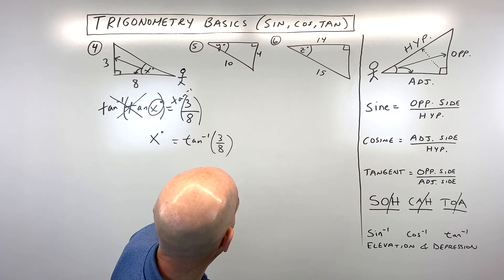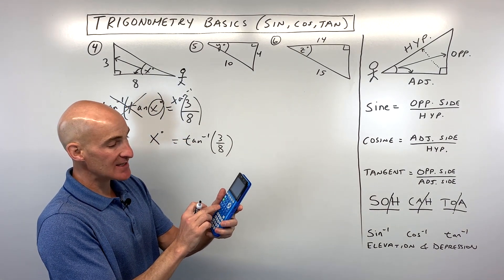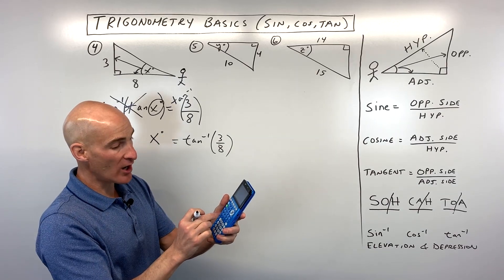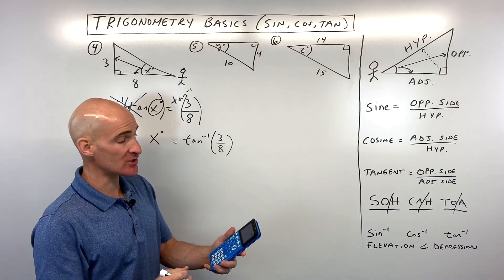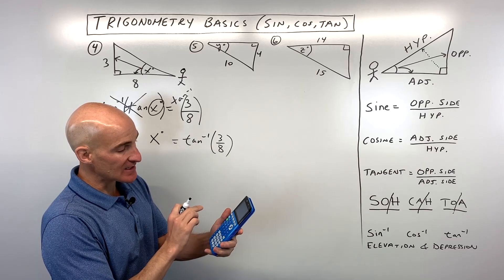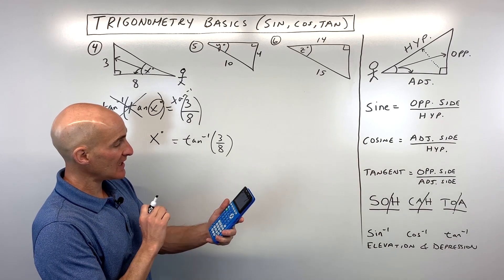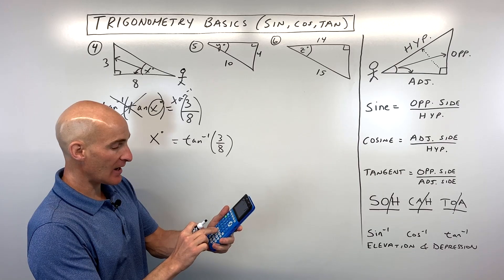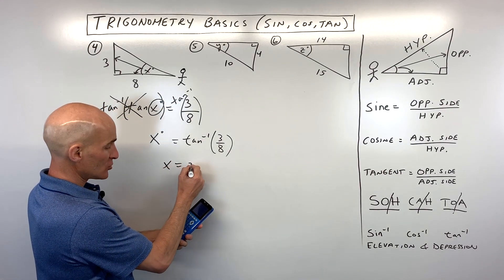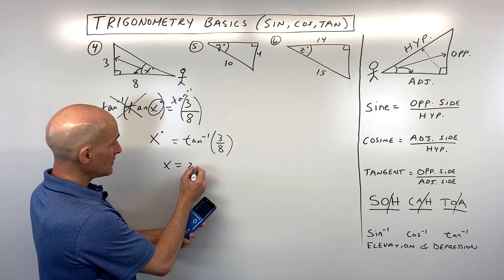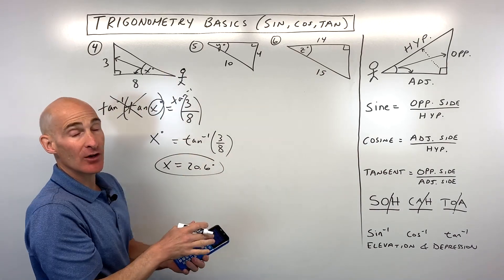On the calculator, right above the sine, cosine, and tangent buttons you'll see the inverse functions labeled with a minus one. Press the second key — on a TI-84 — then tan inverse of three divided by eight. That comes out to about 20.6 degrees. So we've solved for the missing angle.